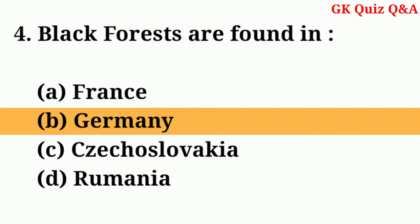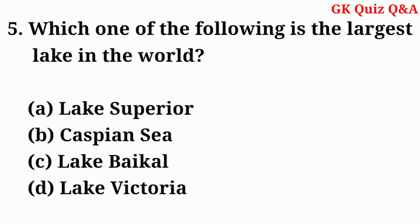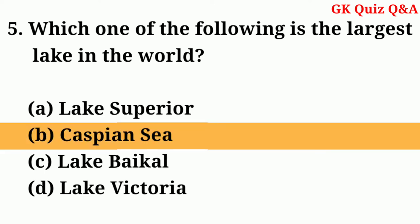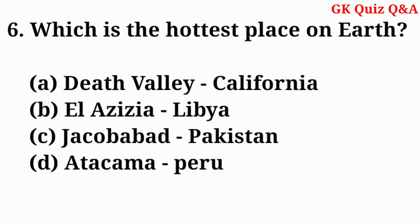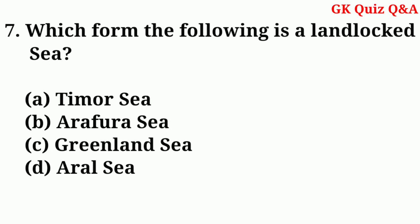Black forests are found in? Answer: B — Germany. Which one of the following is the largest lake in the world? Answer: B — Caspian Sea. Which is the hottest place on Earth? Answer: B — El Azizia, Libya.